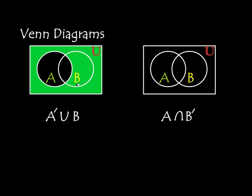But when I look here, it's A complement union B. So that means we're going to include everything in B. So this is also in B. So if I was going to shade this Venn diagram for the answer A complement union B, this is what I would have.